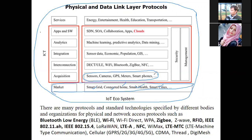Every sensor senses the ambient environment parameter for which that sensor is built. For example, the temperature sensor is built to sense the temperature, not the pressure of the air. So every sensor is built for a specific parameter to be monitored, and the values are sent by those sensors to a gateway or somewhere where we need to collect the data.